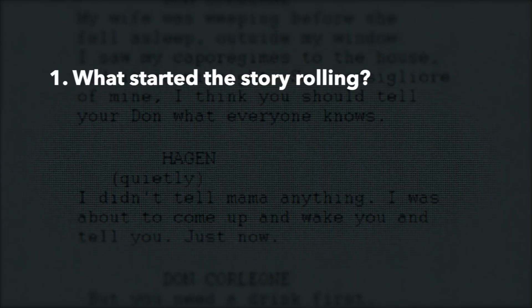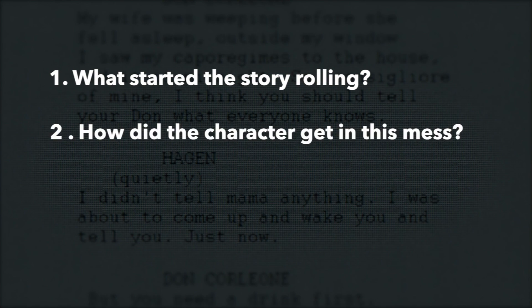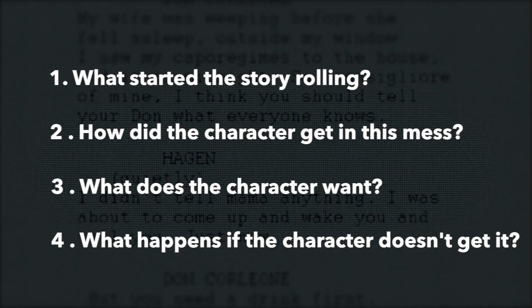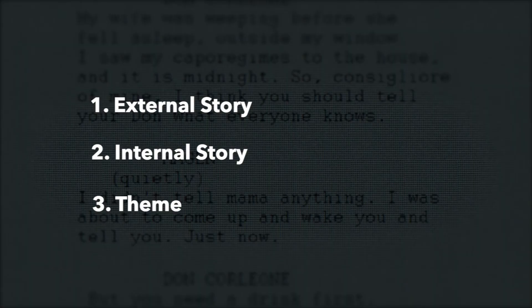So here are questions you can start asking of the plot: What started the story rolling? How did the character get into this mess? What does the character want? What happens if the character doesn't get it? From this list of beats, you want to derive three things: external story, internal story, and theme. First, what's the external story? For Star Wars, the external story is blowing up the Death Star — defeating the Empire. The second thing is the internal story: what does the character need psychologically inside themselves to be whole? Luke has to learn to trust himself and his abilities to reach his full potential. Use the Force, Luke.